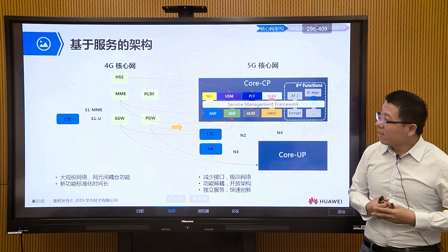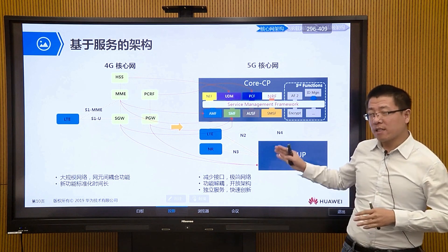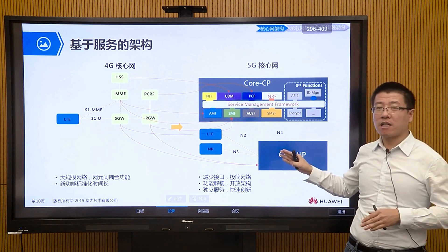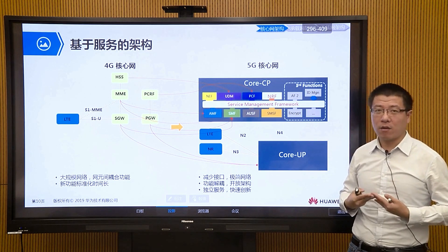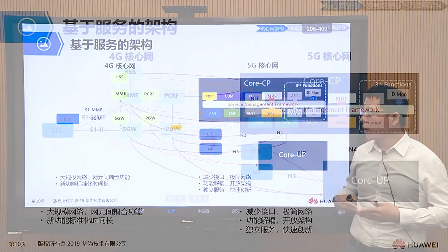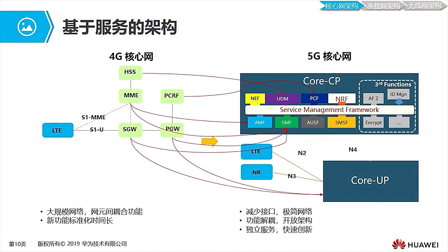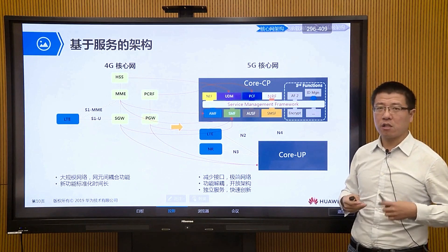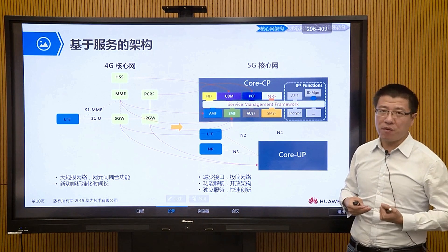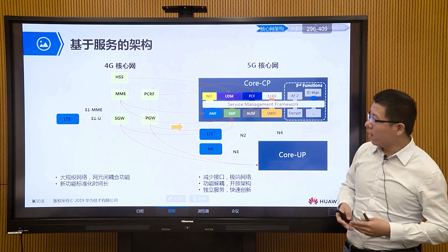We mentioned a concept called SBA — service-based architecture. This was proposed by China Mobile and written into the 5G standard. The entire core network architecture design is service-oriented, based on services. Now let's compare the traditional 4G core network with the new 5G core network to understand the differences.